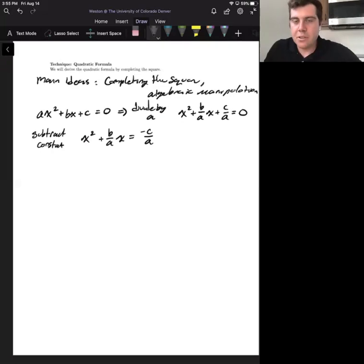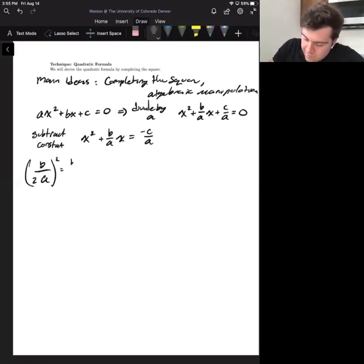So that gives us x squared plus b over a x equals negative c over a. And now we're going to complete the square. Remember, to complete the square, what we do is we take b over a and then we want to divide by 2 and then square it. So that gives us b squared over 4a squared, and that's going to be the term that we add to both sides of the equation.